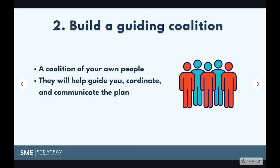Number two is develop or build a guiding coalition — a group of people that are going to help you communicate, guide, and coordinate the plan. Build your team around that urgency. Get your people together and be able to begin moving the change forward. So if you're in the context of a strategic planning session, it might be your board, your senior leadership team, or a project team. First create the urgency, then build the group of people around to start driving that project and plan forward.